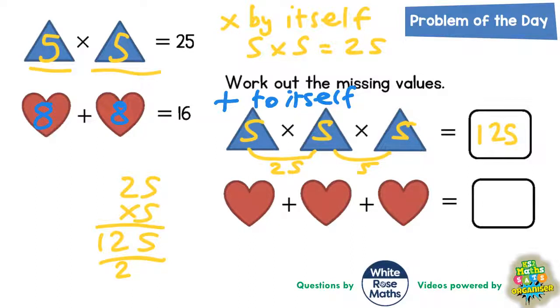Of course you could have just split the 16 in half. Half of 16 is 8, and that would have told you the value of the hearts as well.